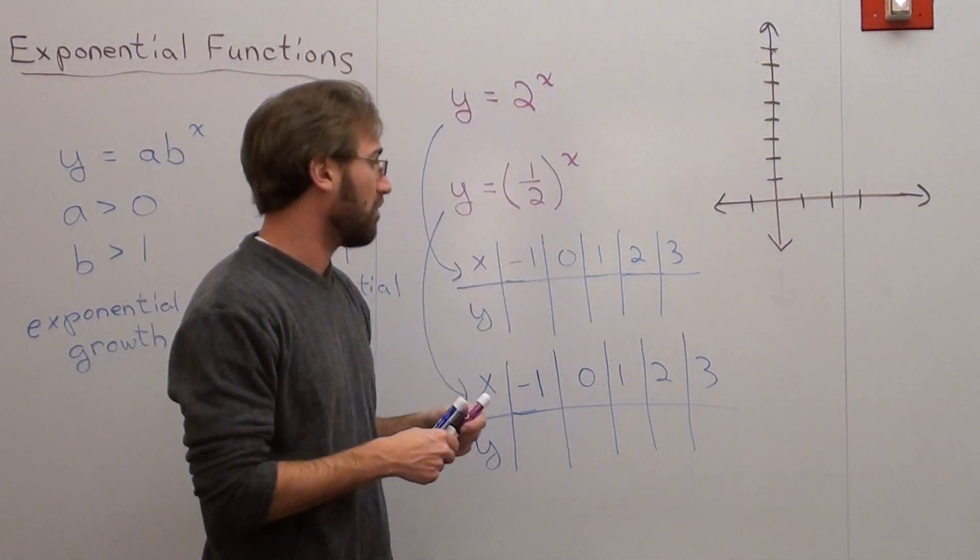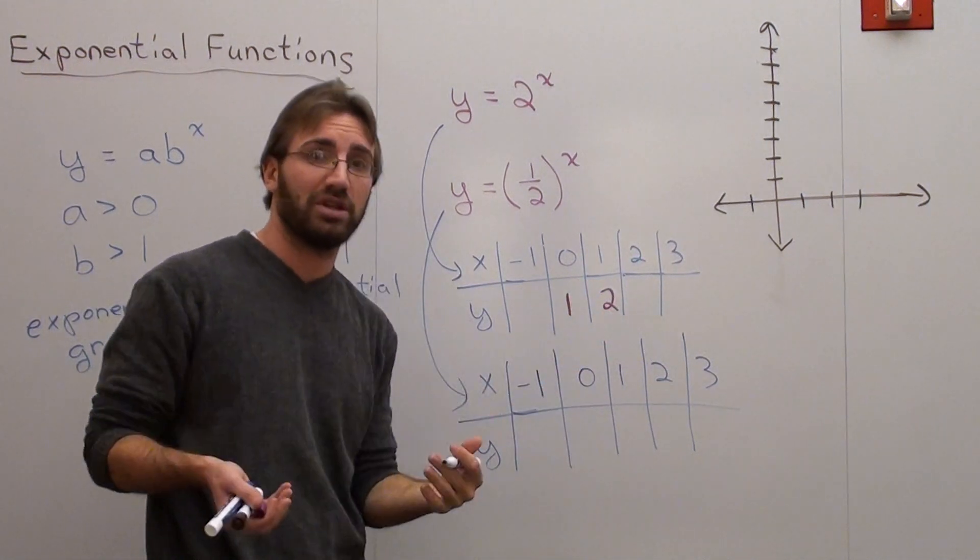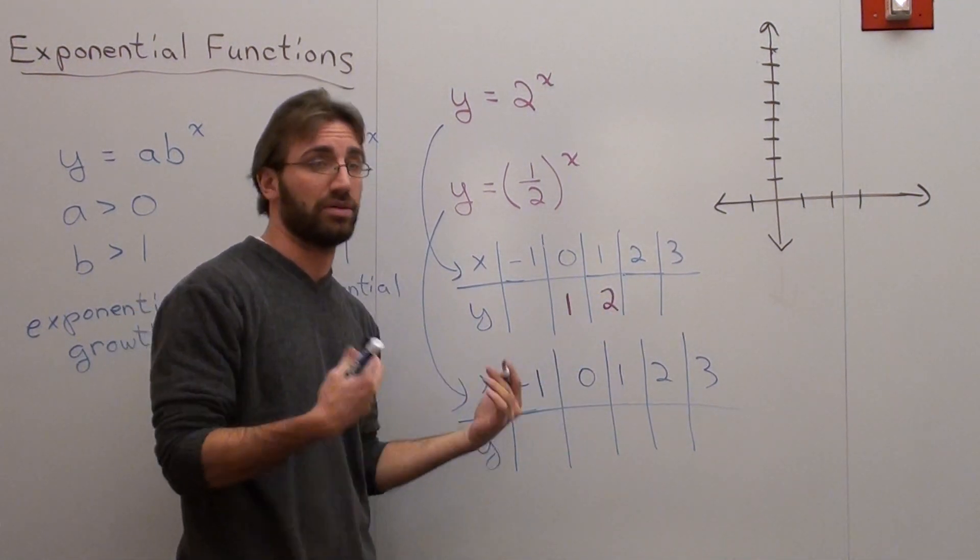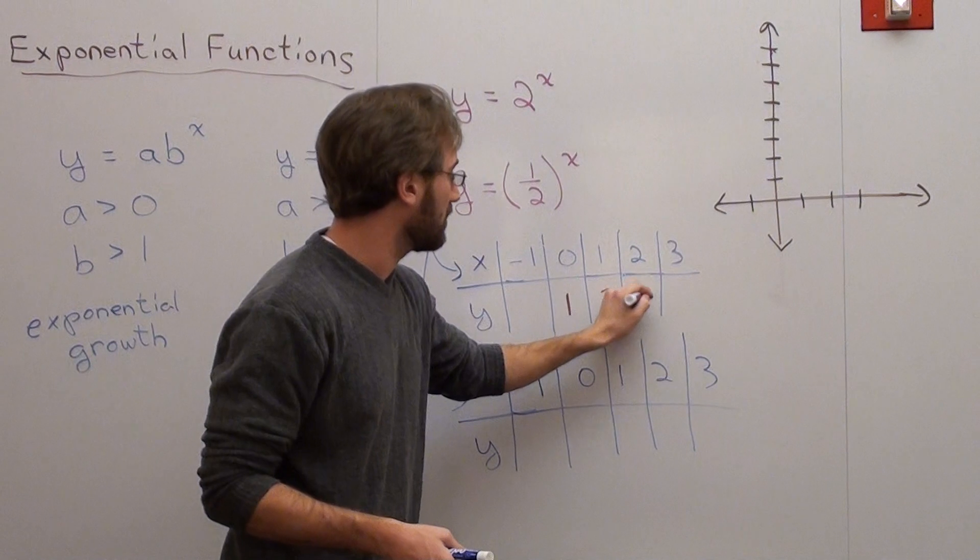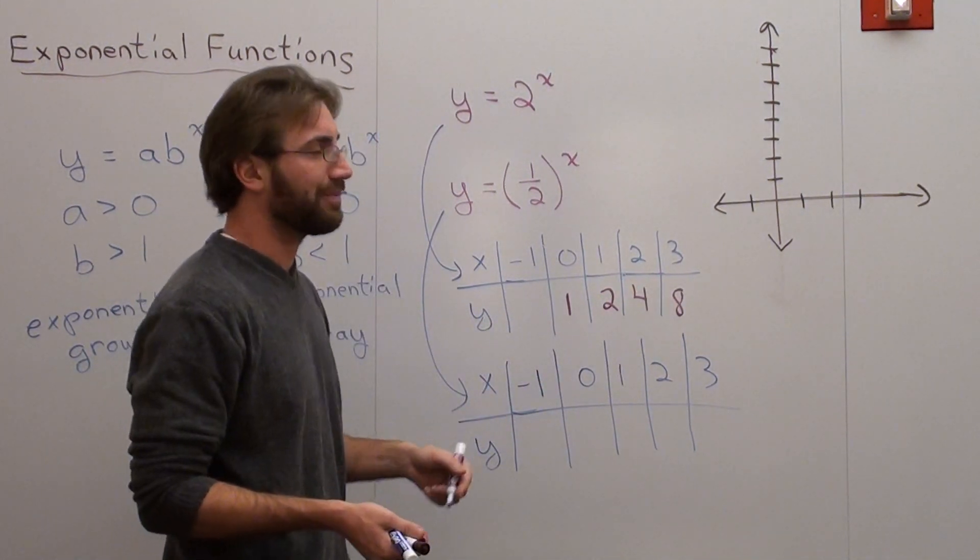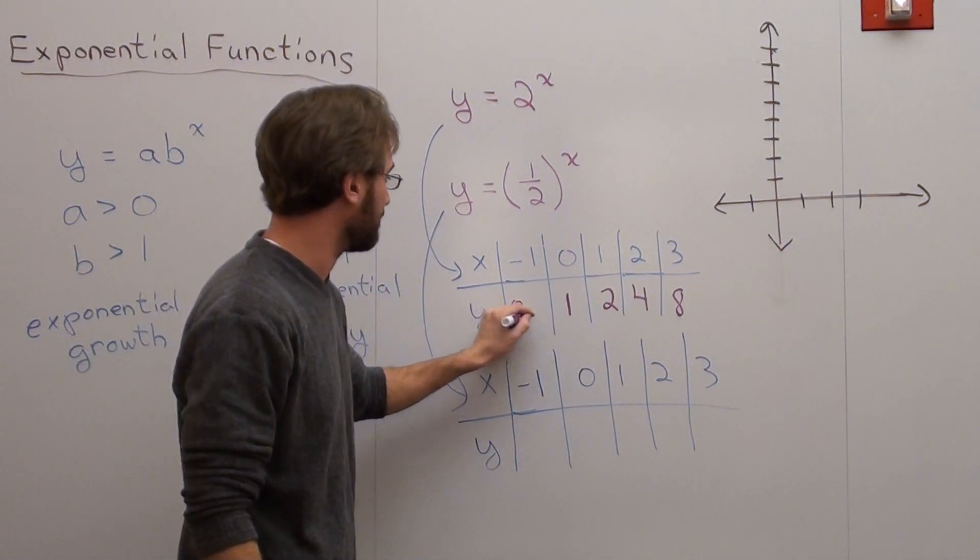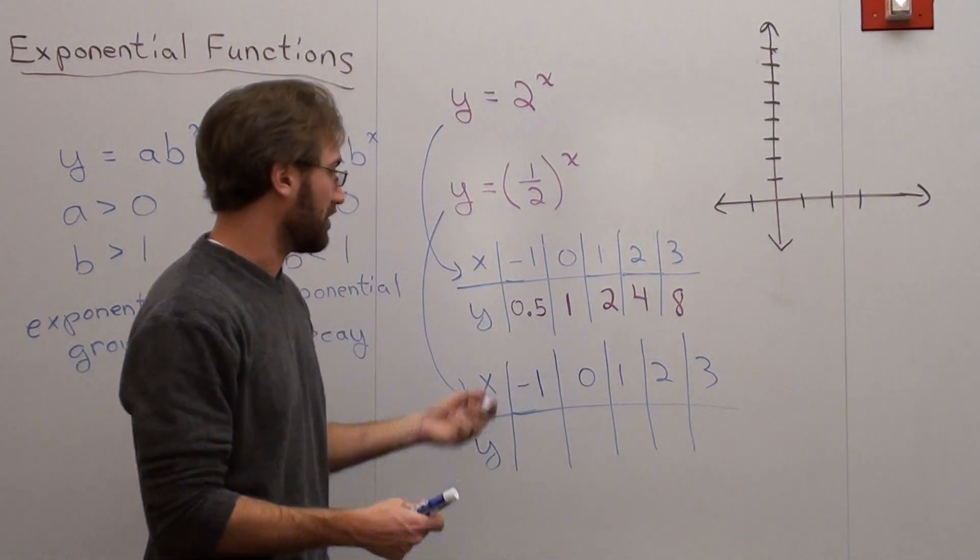You can go ahead and either do this in your head or do it in a calculator or write it down. But 2 to the power of 0 is 1, and 2 to the power of 1 is 2, and 2 to the power of 2 is 4, and 2 to the power of 3 is 8. And then 2 to the power of negative 1 is 1 half, 0.5. So that's your plot for that one.